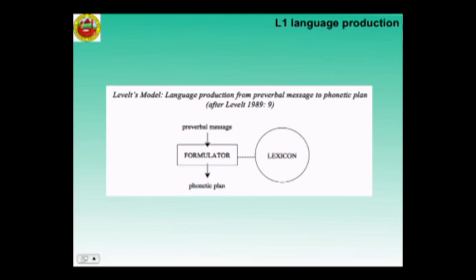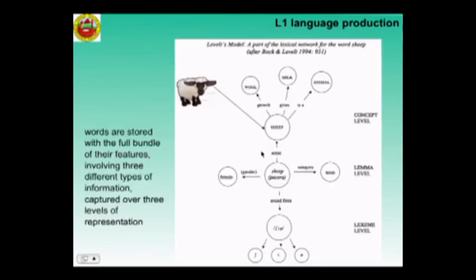Let us look at how the lexicon is organized and what happens in the formulator. In the lexicon, words are stored with their full bundles of features involving three different types of information: at the conceptual level, the lemma level, and the lexeme level — semantics, grammatical, and phonological. They are captured over three levels of representation.